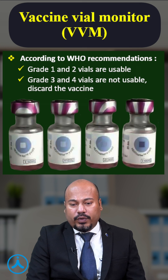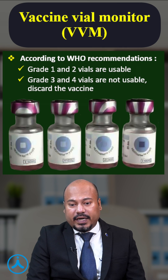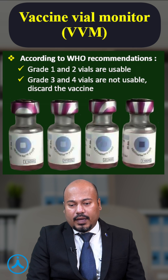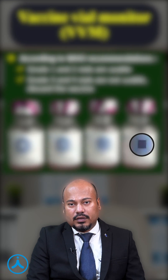In Grade 2, you can see the inner white square has become light blue. In Grade 3, the inner white square has the same color as the outer blue circle, and in Grade 4 the inner white square has become dark blue compared to the light blue outer circle.